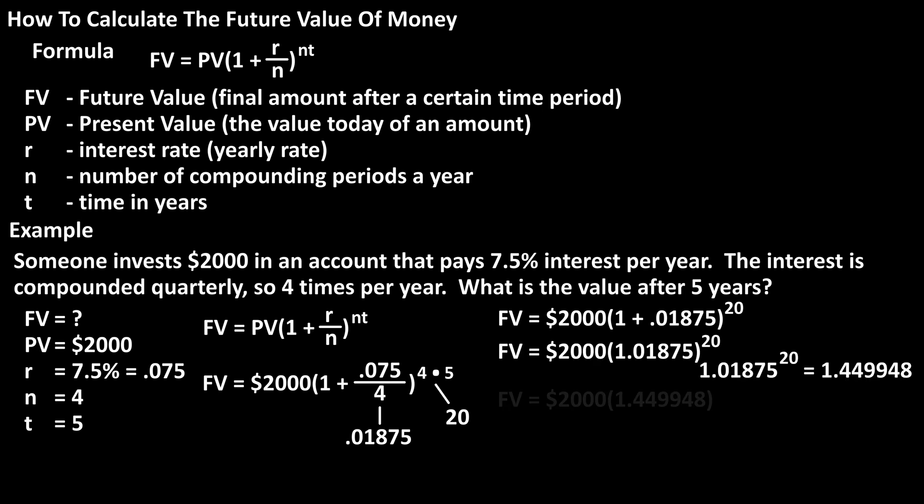And now we have $2,000 times 1.449948, which equals $2,899.90 rounded off.